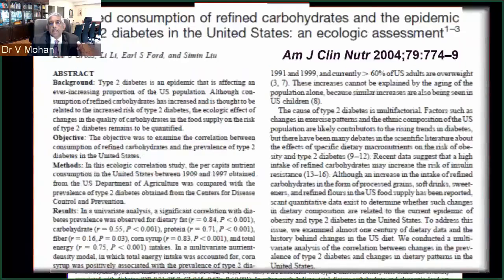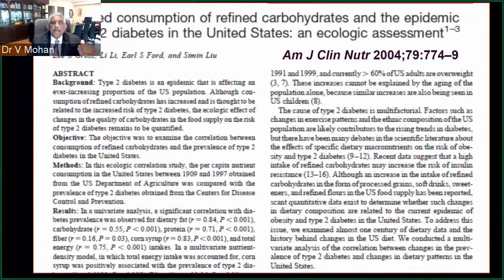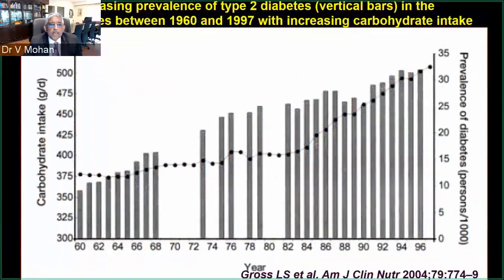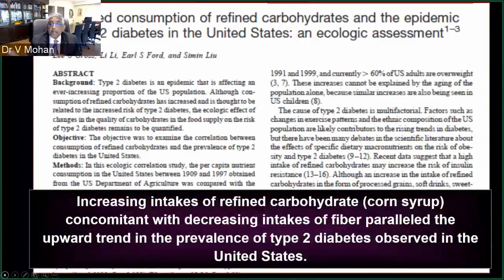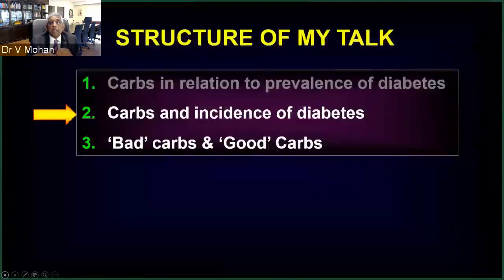Here is a study from the United States, published in the American Journal of Clinical Nutrition by Lee Gross et al., looking at the pattern of refined carbohydrate consumption and the epidemic of type 2 diabetes as an ecological assessment. The dotted line is the prevalence of diabetes and the bars show carbohydrate intake — as diabetes prevalence increases, carbohydrate load increases as well. The authors concluded that increasing intake of refined carbohydrate — in their case, corn syrup — concomitant with decreasing fiber intake, paralleled the upward trend in type 2 diabetes prevalence in the United States.